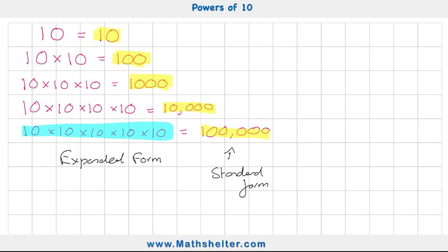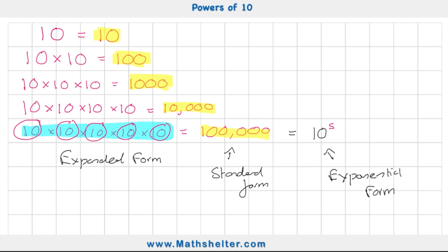Now there's a third column — the exponential form. The exponential form shows how many tens we've broken down to get to our standard form. In our last example we have 10 times 10 times 10 times 10 times 10 — five of them — so we write that as 10 to the power of 5. This is what we call the exponential form.